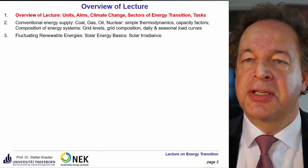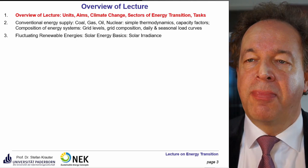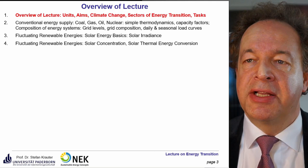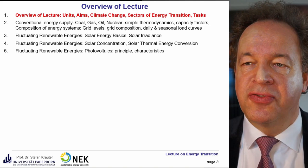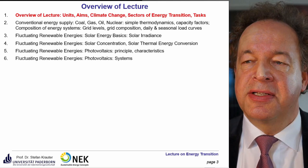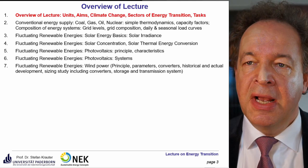Then we start with renewable energies, first focusing on fluctuating renewables such as solar energy. We'll cover solar irradiance, conversion via solar concentration and solar thermal energy, and then the direct conversion of sunlight into electricity — photovoltaics — including its principles, characteristics, and photovoltaic systems covering both the generating and conditioning parts.